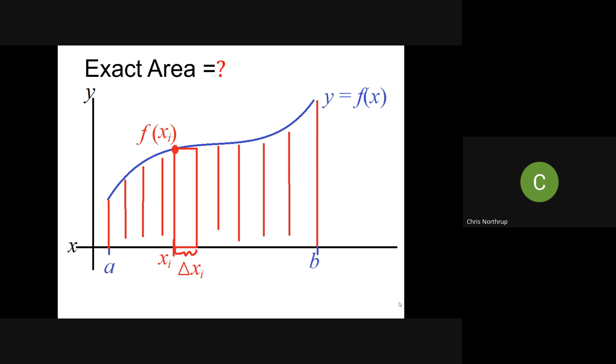So the question is, how would I get the exact area? Well, if I'm looking at that expression, sum i goes from zero to n of f of x sub i times delta x sub i, I could take the limit as n goes to infinity. If that limit exists, that would give me the exact area.